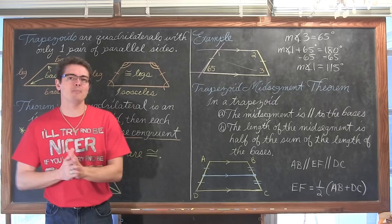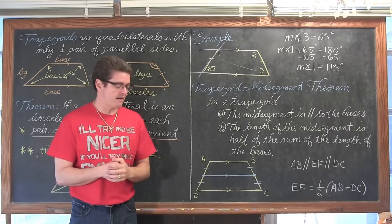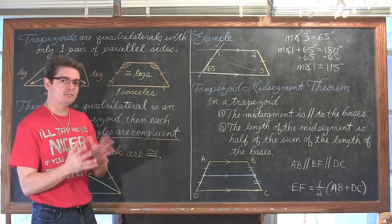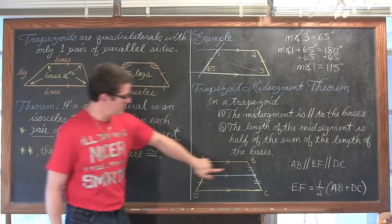Trapezoid mid-segment theorem. We talked about mid-segments in triangles — they had the special property that the mid-segment was parallel to the third side of the triangle and equal to half its length. We still have a similar relationship in trapezoids.